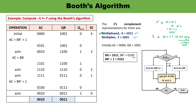Iteration 1: QN=1 and QN+1=0, so we add BR̄+1 (0101) to AC (0000), giving 0101. The QR content remains 1001, QN+1 is 0. Then we perform arithmetic shift right: AC and QR are shifted right one bit. The sign bit is preserved, giving AC=0010, QR=1100, QN+1=1. The sequence counter is decremented to 3.